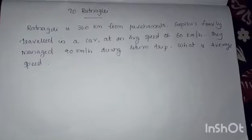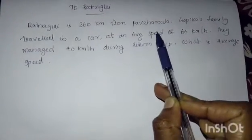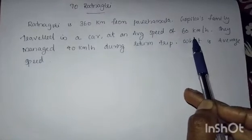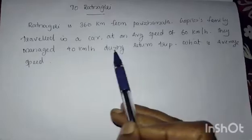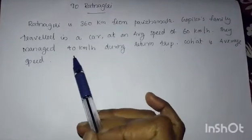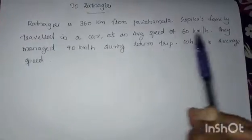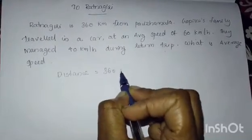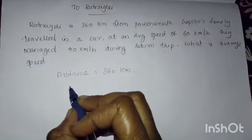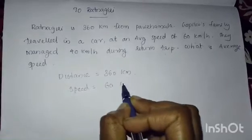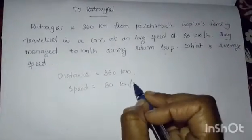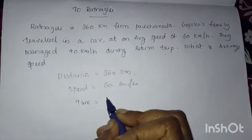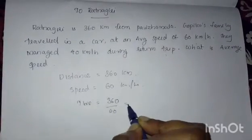The next problem: Reknagiri is 360 km from Paviramala. Gopika's family traveled by car at an average speed of 60 km per hour, and managed 40 km per hour during the return trip. We set up the table — the distance is 360 km each way. For the outbound trip at 60 km/h, dividing distance by speed gives a time of 6 hours.